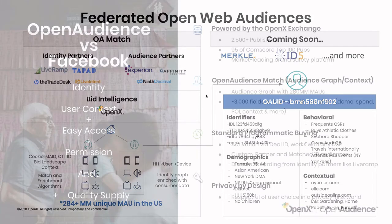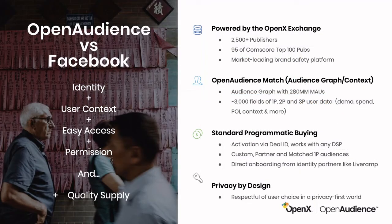Let's look at Open Audience versus Facebook. How Facebook packages itself is a playbook that we should all learn from in programmatic. A product like Open Audience — that federates identity and user context through a variety of data partners, makes it easy to access through an API or UI, with permission and quality controls for supply built in — that's a way of packaging. We have 2,500 publishers integrated and are running hundreds of millions of dollars worth of advertising through those pipes. They're the most notable publishers in the world, publishing great content, and we have a market-leading position on brand safety.